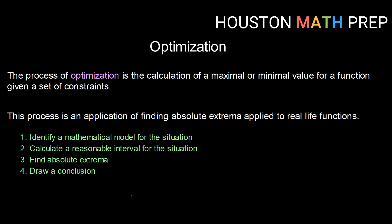we're going to take a look at the process of optimization. So optimization is the calculation of a maximal or minimal value for a function given a set of constraints. This is a process that involves the application of finding absolute extrema, which we've done before, but now applied to real-life functions.